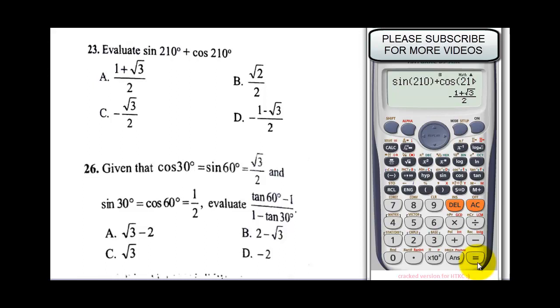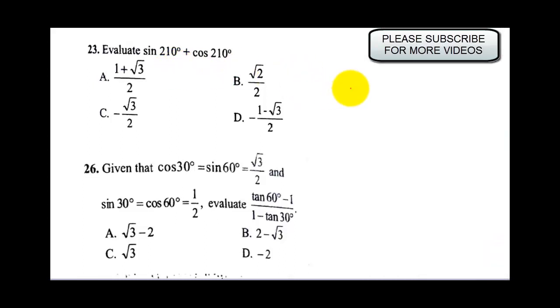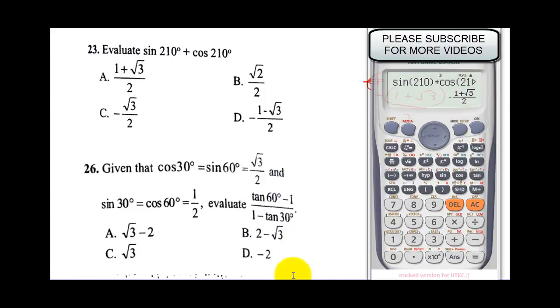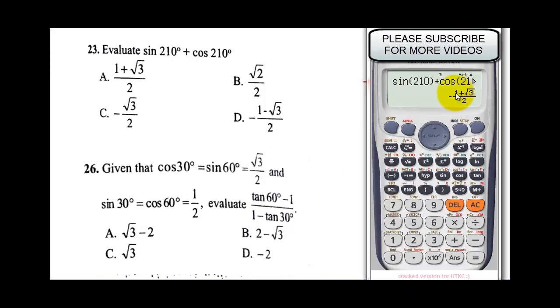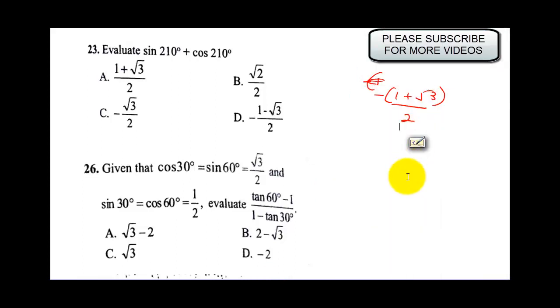Notice we don't have our answer here. It says minus bracket 1 plus root 3 over 2. Notice the minus is not in front of the 1, it's minus everything. When we have something like this, we open the bracket: minus 1 minus root 3, all over 2. From here, you know that our correct answer is D.